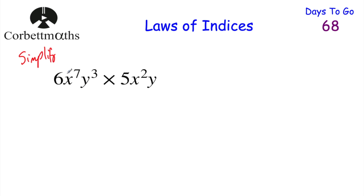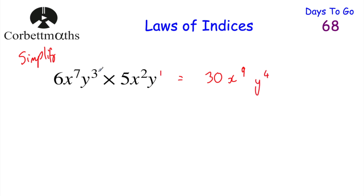Next question: simplify 6x to the power of 7 y cubed multiplied by 5x squared y. Press pause and try this. First multiply the numbers at the front: 6 times 5 is 30. Then deal with the x's: x to the power of 7 multiplied by x to the power of 2 — add the powers — gives x to the power of 9. For the y's: y cubed multiplied by y — treating y as y to the power of 1 — gives y to the power of 4. So the answer is 30x to the power of 9 y to the power of 4. If you got that, well done.